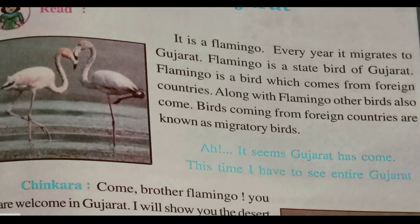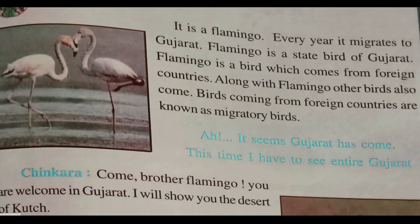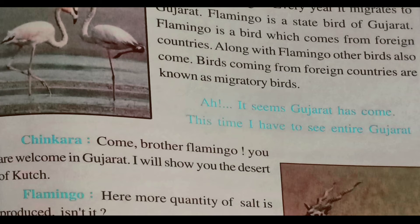Flamingo is a bird of Gujarat. If you visit Gujarat, you will get to see a flamingo. Flamingo is a bird which comes from a foreign country — it does not live in India. Along with flamingo, other birds also come. Birds coming from foreign countries are known as migratory birds.